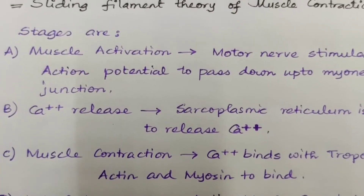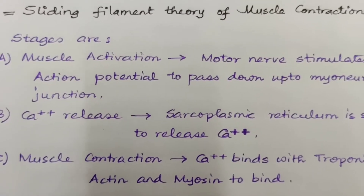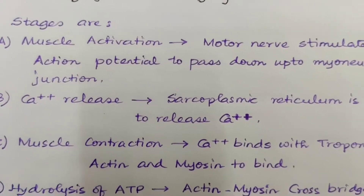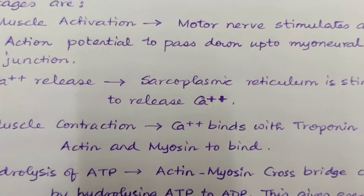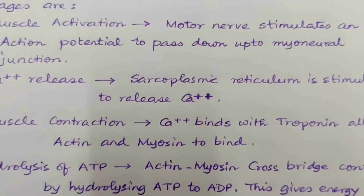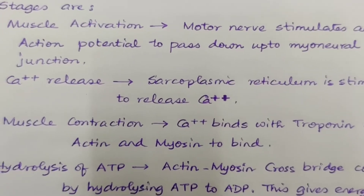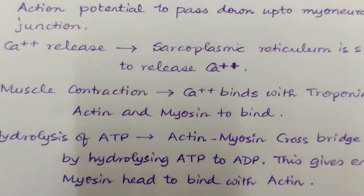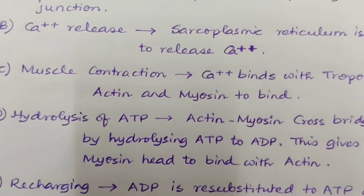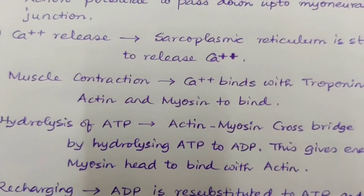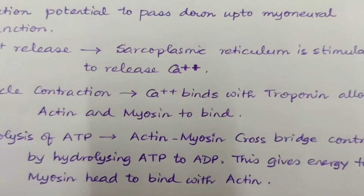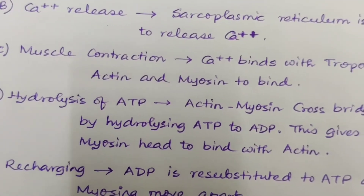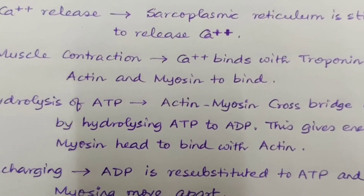This is the sliding filament theory of muscle contraction. The stages are: Stage 1, muscle activation — a motor nerve stimulates an action potential to pass down to the myoneural junction, or neuromuscular junction. Stage 2 is calcium ion release — calcium ions are released from the sarcoplasmic reticulum by stimulation.